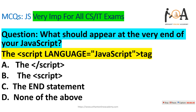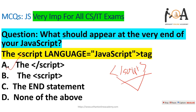The first question is: what should appear at the very end of JavaScript? If you are familiar with JavaScript, this is the easiest question. The answer is option A — the closing script tag, which is the angle bracket markup tag with forward slash and script. The opening tag is the script tag with the language JavaScript attribute.